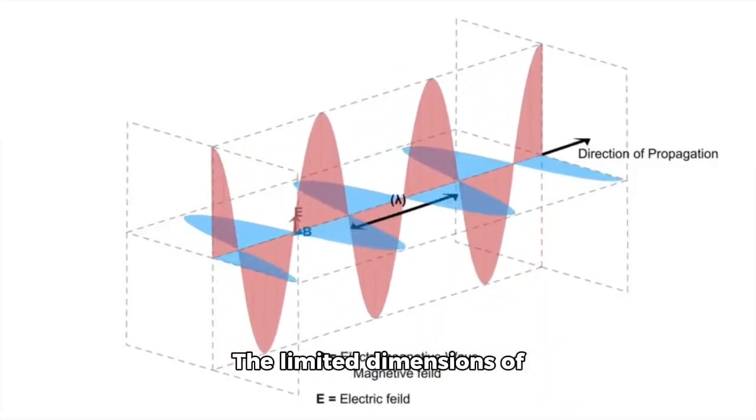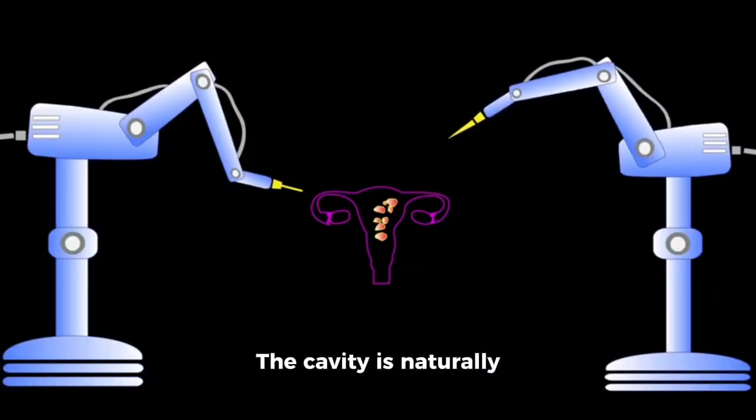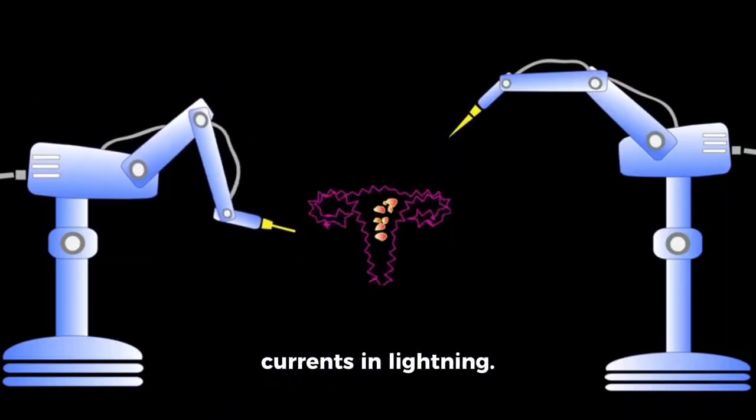The limited dimensions of the Earth cause this waveguide to act as a resonant cavity for electromagnetic waves in the ELF band. The cavity is naturally excited by electric currents and lightning.